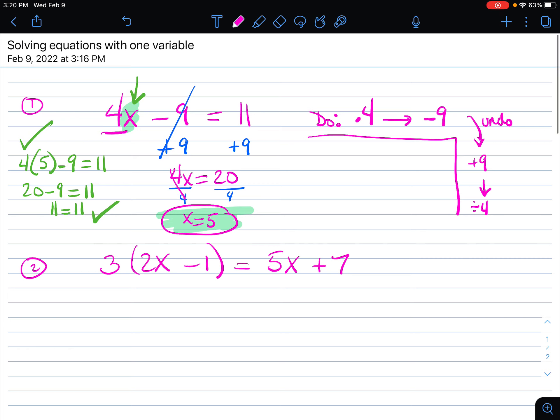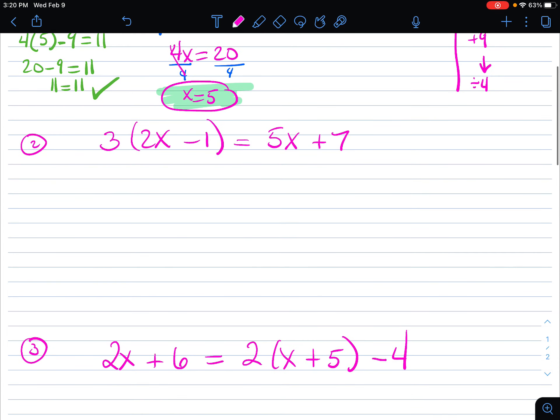Now the second type of example we can see with problem 2 here is that we have x's on both sides of the equation. Before the do and undo, we're going to collect the variables to a single side.